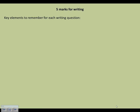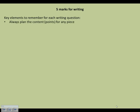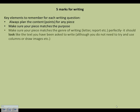The five marks for writing are straightforward. You get perfect marks the same way you get perfect marks for any piece of writing, including your coursework. Make sure you always plan your content, ensure the piece matches the purpose — whether it's writing to inform or to entertain — and make sure the piece matches the genre and looks exactly like what you're being asked to write. Remember, you don't need to use columns, draw images, or fold anything up if it's a leaflet. Use a variety of sentence types for particular effects.